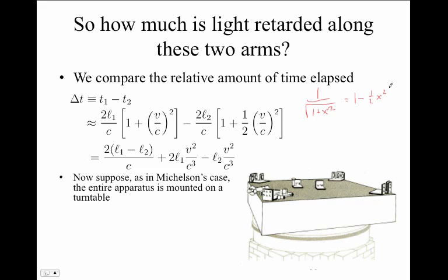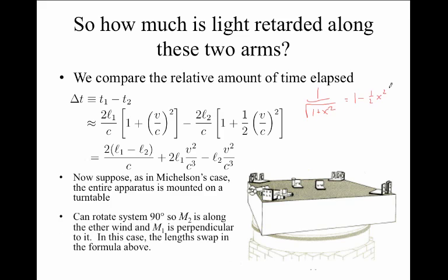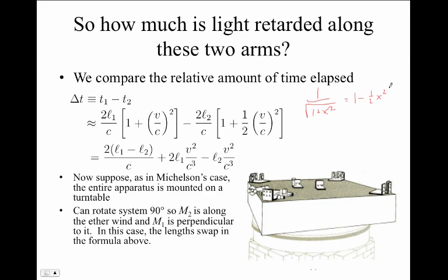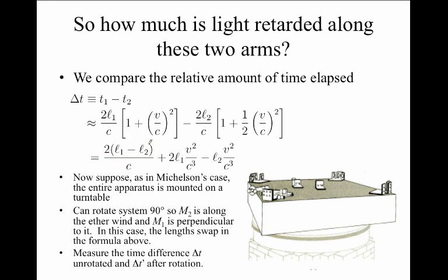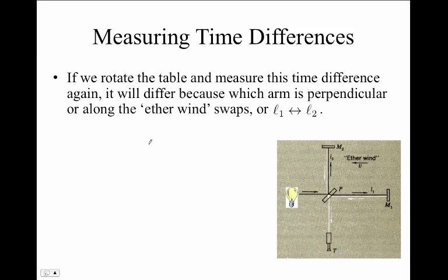Michelson had a particular trick in that his entire apparatus was mounted on a turntable. It could be rotated. And thus, he could change which mirror was pointing along the alleged ether wind. He could rotate the system 90 degrees so that M2 would be along the ether wind and M1 would be perpendicular to it. In this case, the lengths L1 and L2 in these formulae would swap. Then he could measure the time difference delta t in the original orientation and delta t prime in the subsequent orientation after rotating the table.